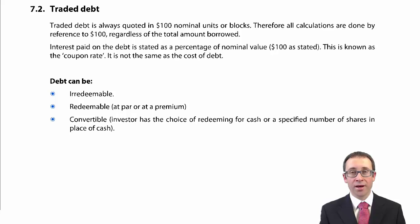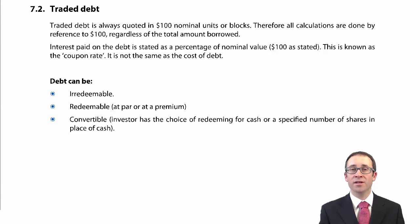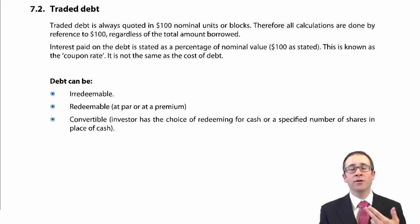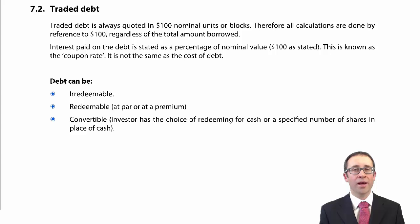The second aspect that we'll go through and look at is redeemable debt. So I issue debt, and the issue there is that that debt, at a point in time — maybe in five years' time — will need to be repaid. So when we are working out the cost of debt using the IRR of the cash flows, there's not only an interest payment to consider, there is not only a tax saving on the interest to consider, but there is also a redemption value to consider, which makes the IRR calculation that little bit more complex.